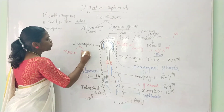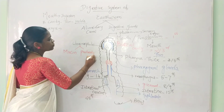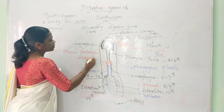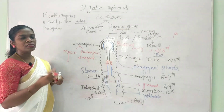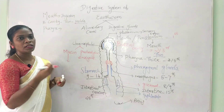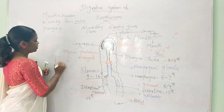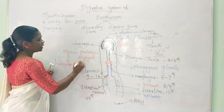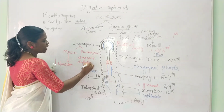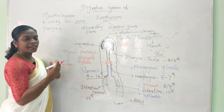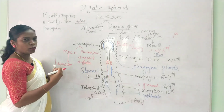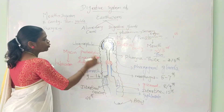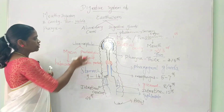The second substance secreted is a proteolytic enzyme. Mucin functions for lubrication. The proteolytic enzyme functions for the digestion of protein — earthworms eat detritus, dead leaves, soil particles, and protein material, which is digested by the proteolytic enzyme.